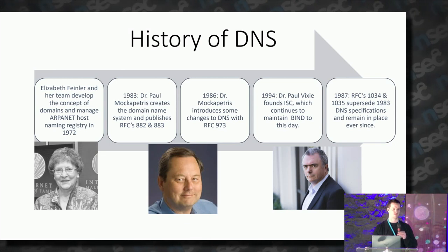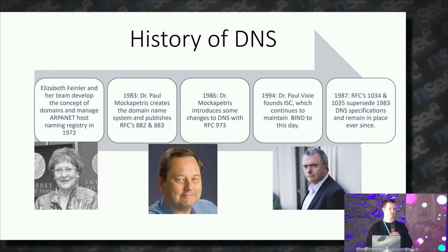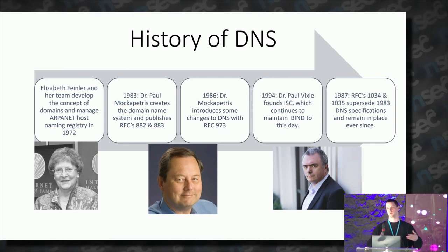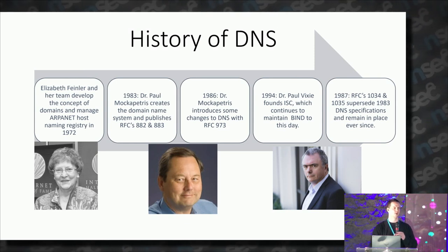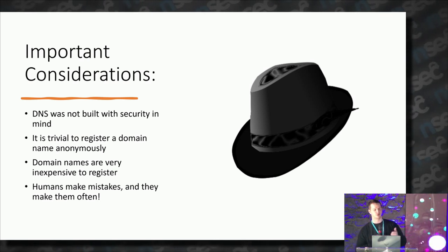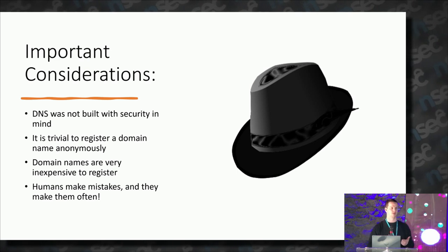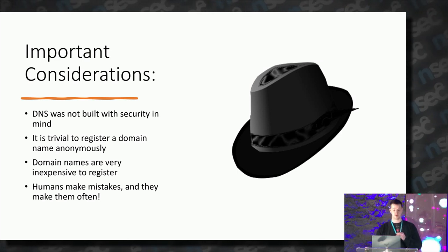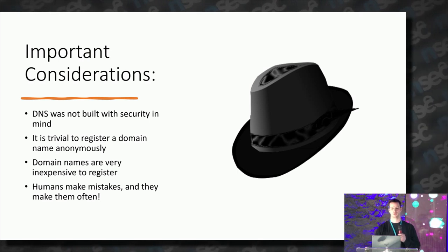It's a 30-year-old technology that hasn't really evolved in 30 years — long before a time when people were thinking about cybersecurity and the security implications of how DNS works. The internet was not designed to be secure; it was designed to be robust. A decentralized naming system was designed to stop a bomb from destroying infrastructure — to route packets and be resilient, but not concerned about data security or privacy. So putting on the black hat for a second: DNS was not built with security in mind, it's very trivial to register a domain name anonymously, it's inexpensive, and humans often make mistakes — and DNS relies on human input more than anything.